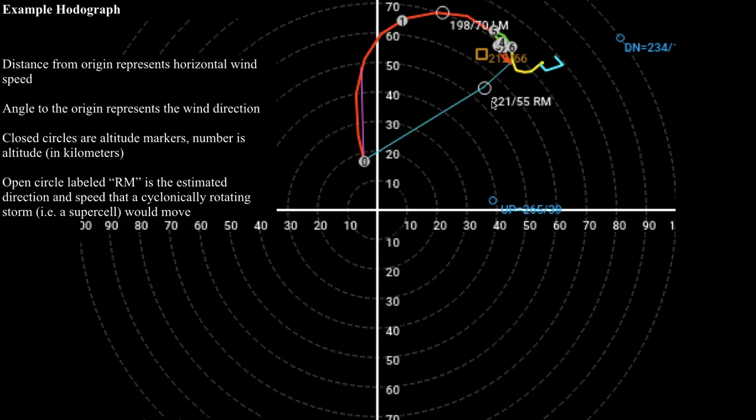This open circle right here labeled RM, that's an estimate of what direction a cyclonically rotating supercell would actually want to move if put inside this environment. And I do stress that this is an estimate.